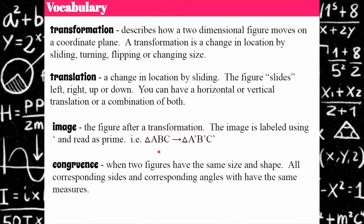Congruence is another important vocabulary word to understand as we talk about transformations. When two figures have the same size and shape — meaning all corresponding sides and corresponding angles have the same measures — all translations must be congruent in order to be a translation.